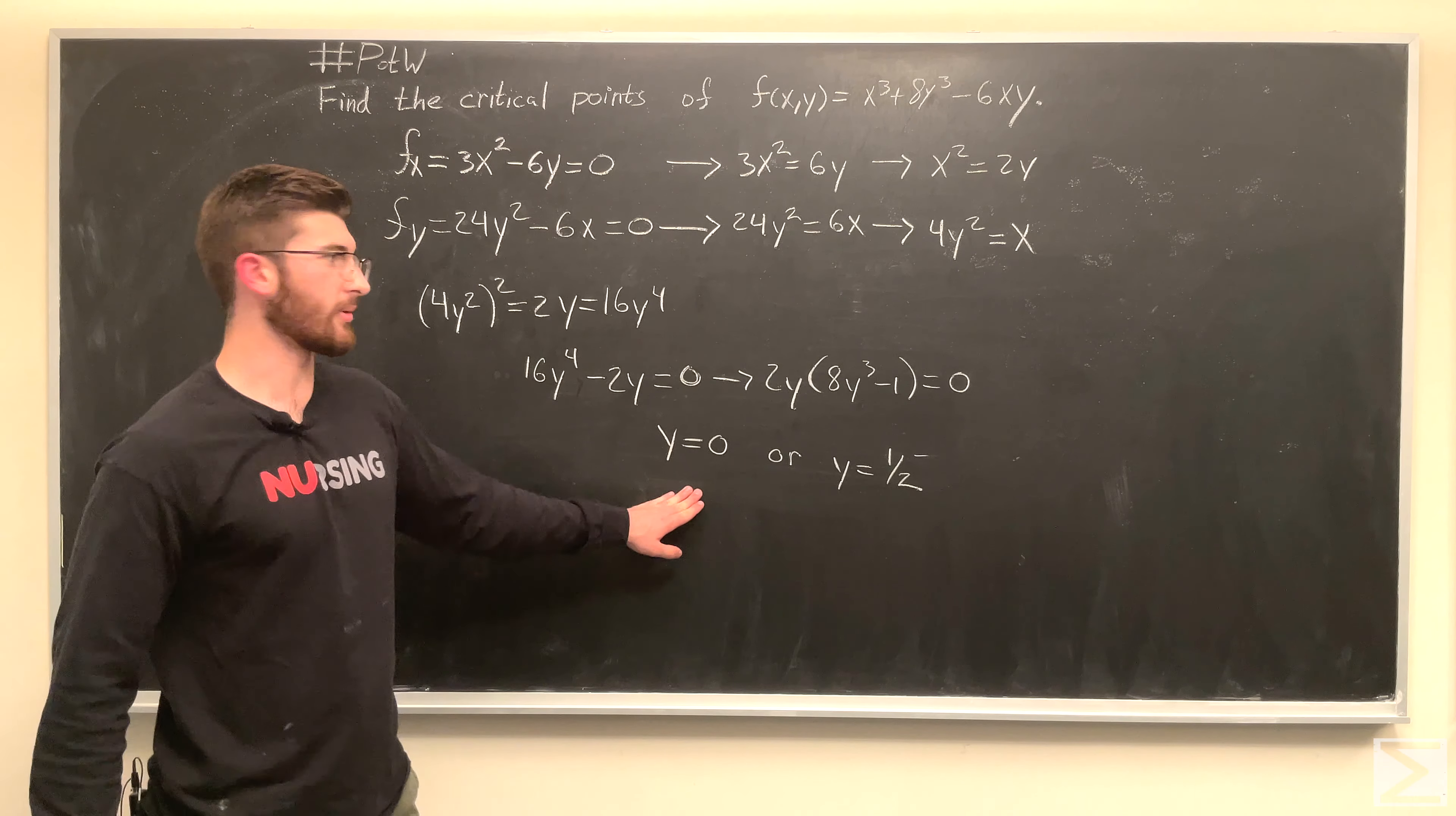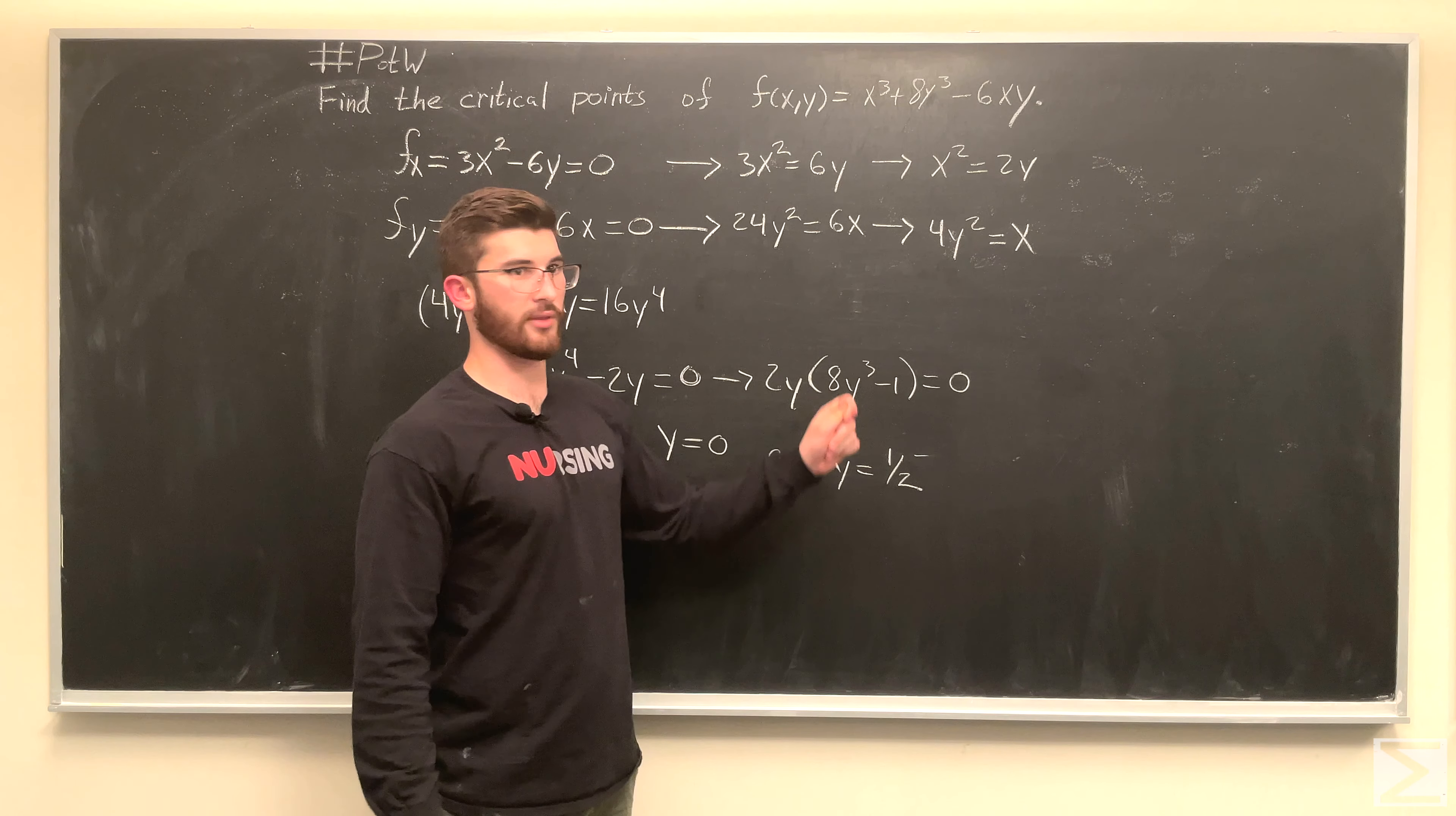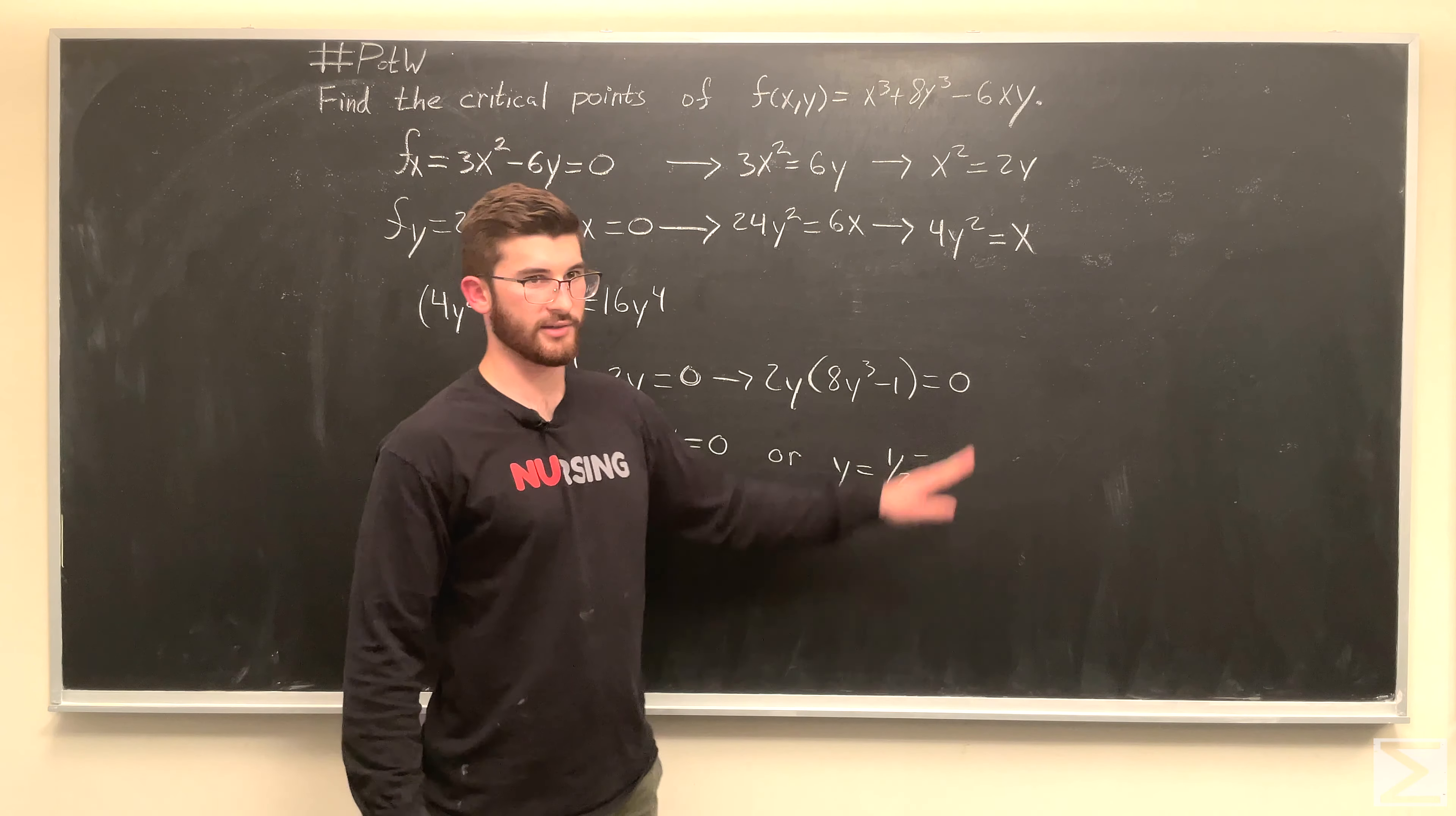So, if we go up here, if y equals 0, and 4y squared equals x, so, then if y equals 0, then x equals 0. And, same here, if y equals 1 half, then x equals 1.